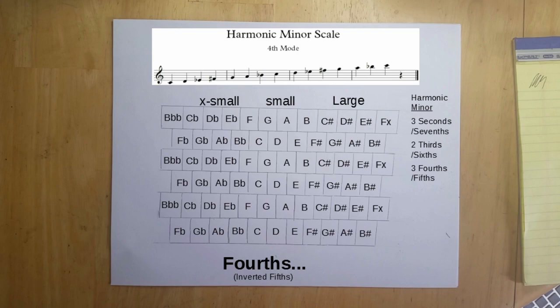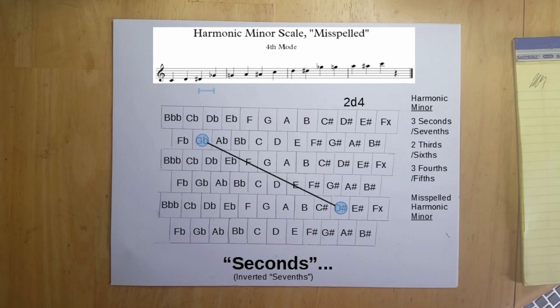Whereas the misspelled version has four types of 2nd and 7th, three types of 3rd and 6th, and three types of 4th and 5th.